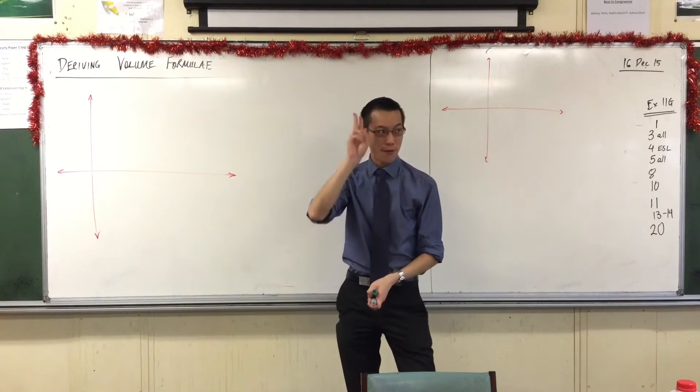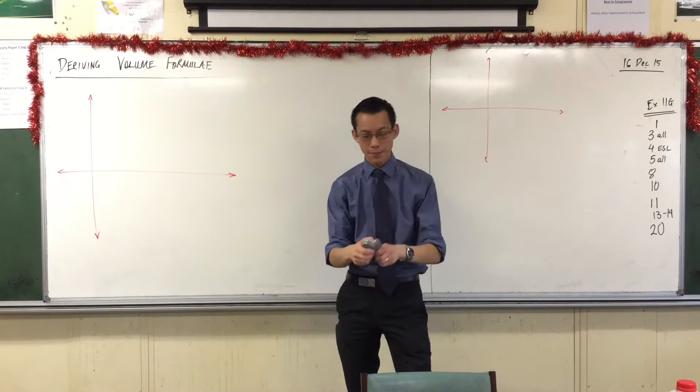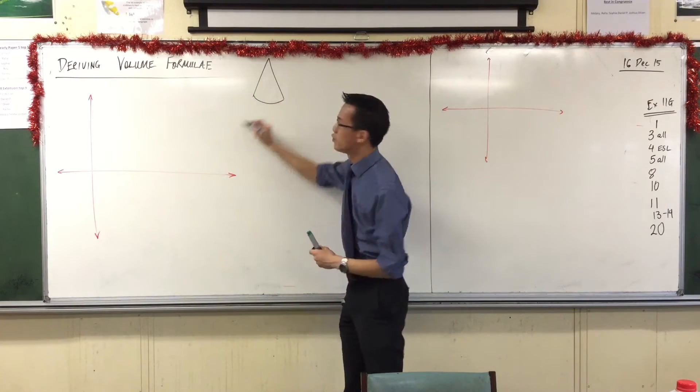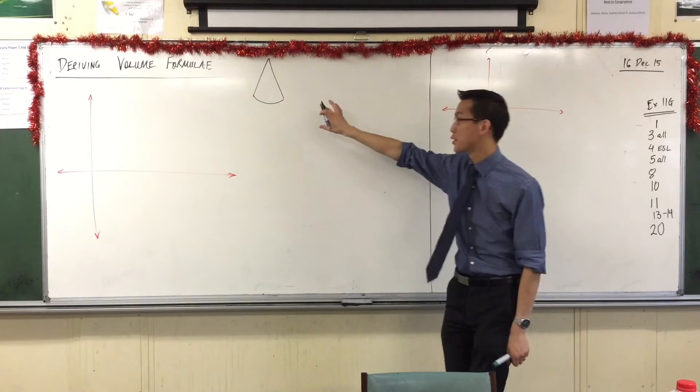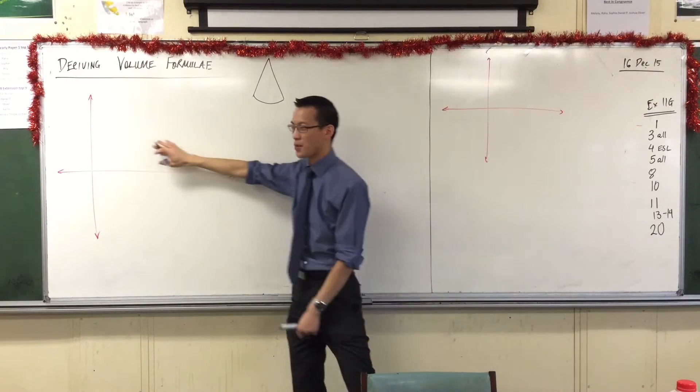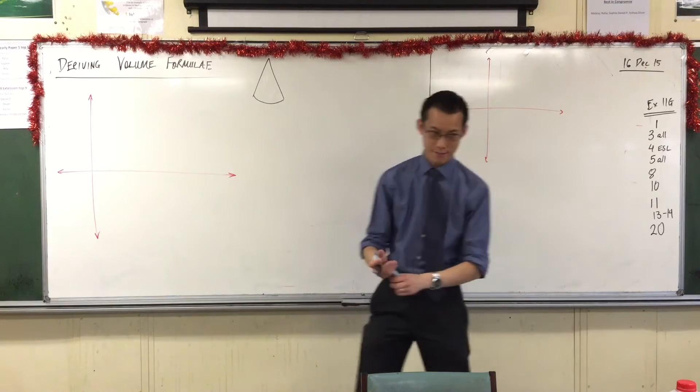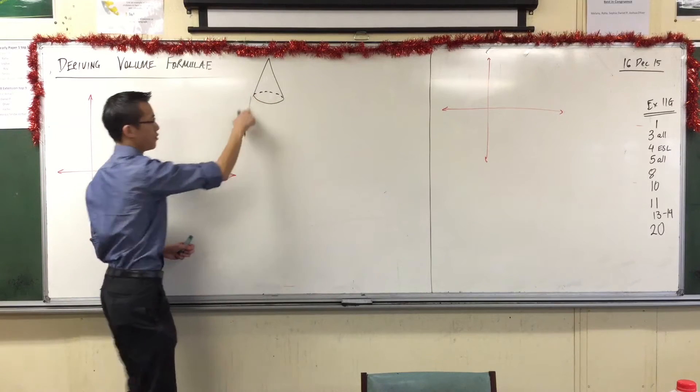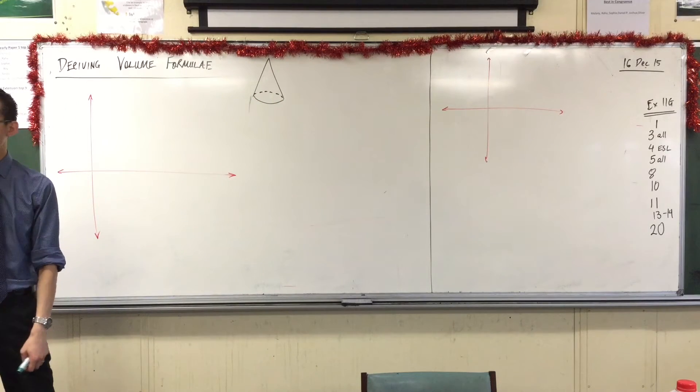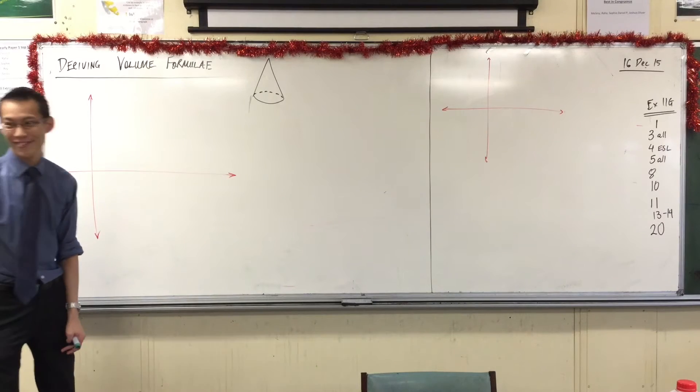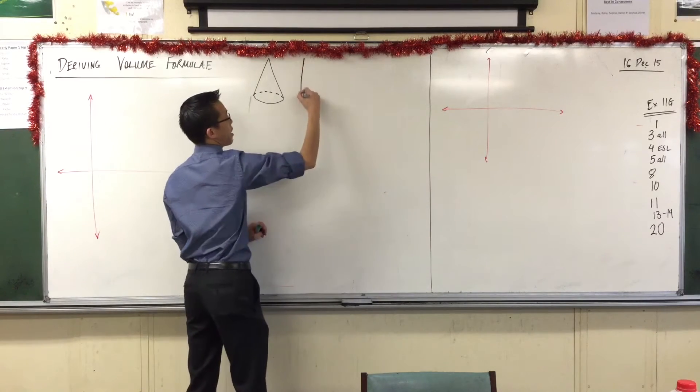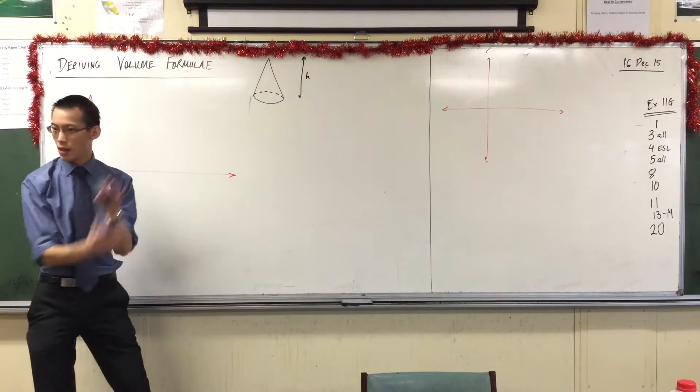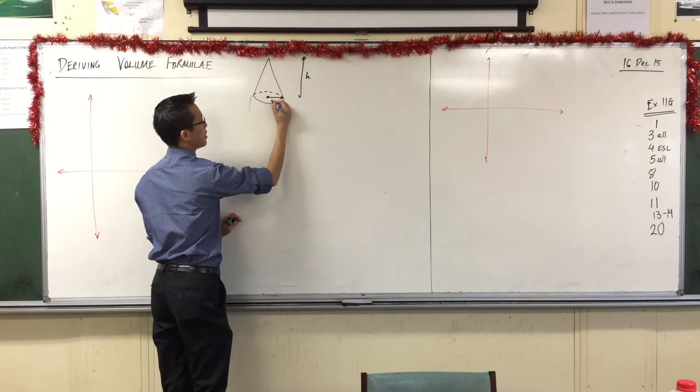We're going to look at two formulas involving volume. The first one is the volume of this shape and I actually would like you to draw it quickly for me because we're going to use this as some basic working before we get to our Cartesian plane. This of course is our cone. To work out the volume of a cone, just like the volume of a cylinder, you need two dimensions. What two dimensions do you need? Height. You need a perpendicular height, and you need the radius of the base.